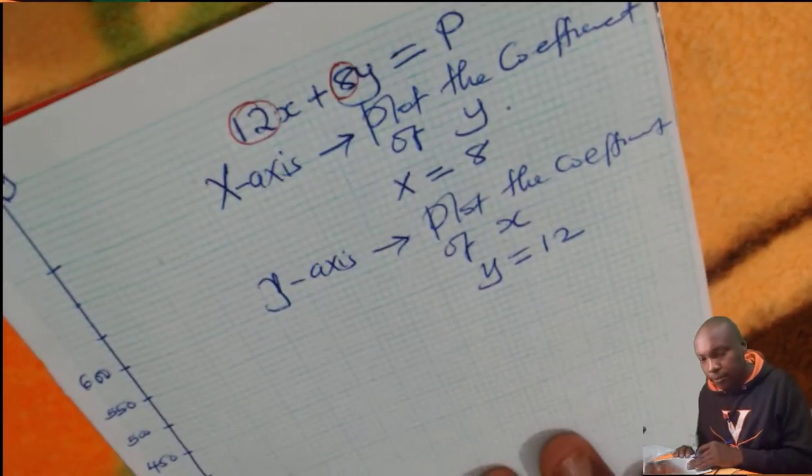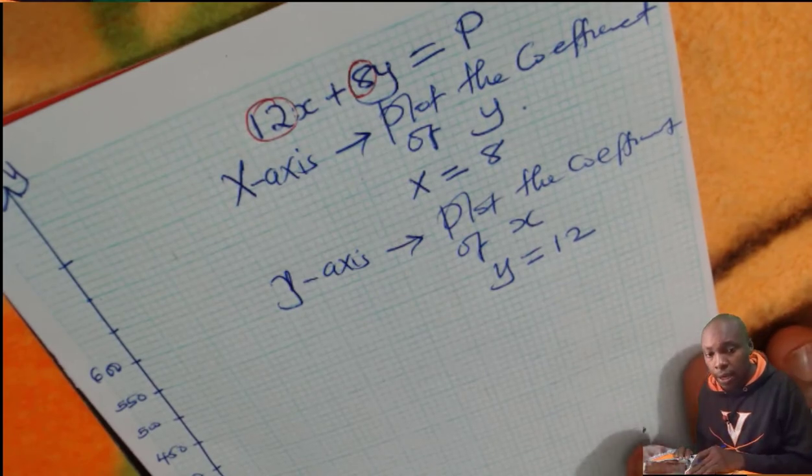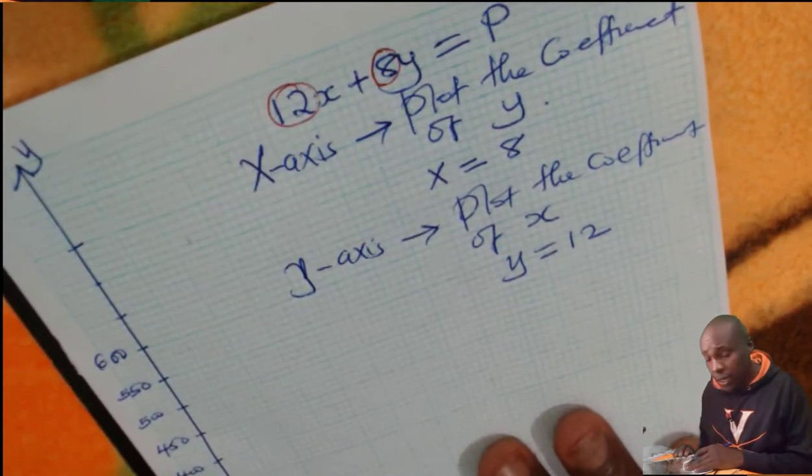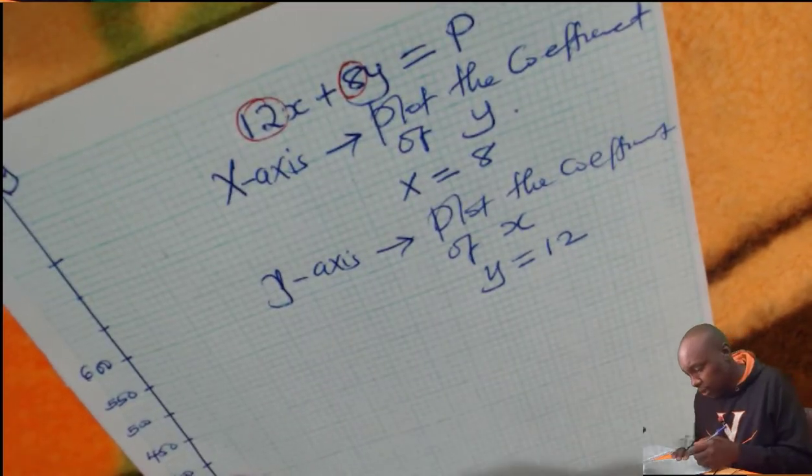Therefore, when you're plotting that search line, you need two points to plot that line. Or you can add that one for confirmation. But two points are still okay.